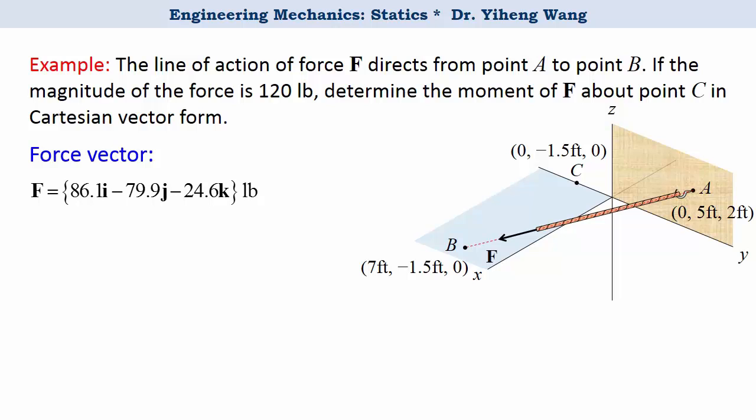The next step is to find a position vector that starts from the point of interest, in this case point C, and ends on the line of action of this force. We have unlimited options like this one, or this one, or this one.